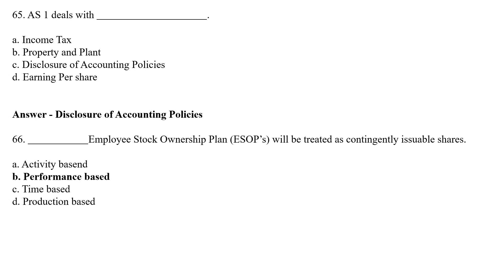AS 1 deals with — Option A: income tax, Option B: property and plant, Option C: disclosure of accounting policy, Option D: earning per share. The correct answer is Option C — Disclosure of Accounting Policy. AS 1 deals with disclosure of accounting policy.